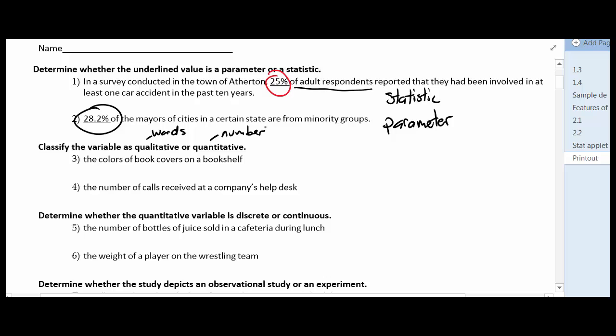So number three, the colors of book covers on a bookshelf. If I was collecting data along those lines, I would expect to hear answers like red, brown, yellow, and so those are qualities, and that means that we're looking at qualitative data.